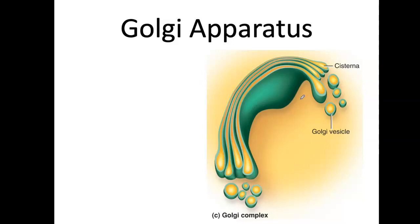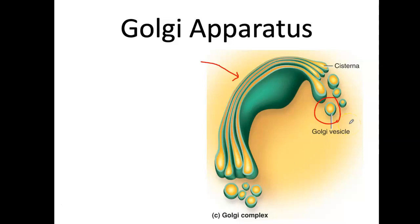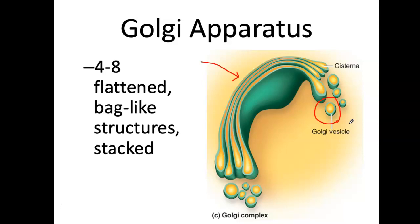Another organelle is the Golgi apparatus, often described as a stack of pancakes — and it does look like one, with something dripping off the ends. The Golgi apparatus is responsible for packaging things made inside the cell. A protein comes in, gets packaged, and is released inside a little vesicle called a Golgi vesicle. It's thought of as the UPS plant — it packages things and sends them somewhere else. It consists of four to eight flattened bag-like structures that are stacked — it's the packaging plant of your cells.